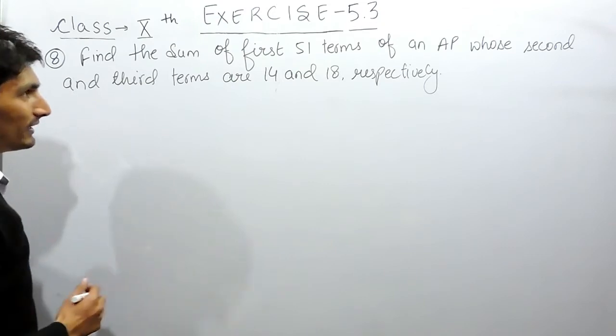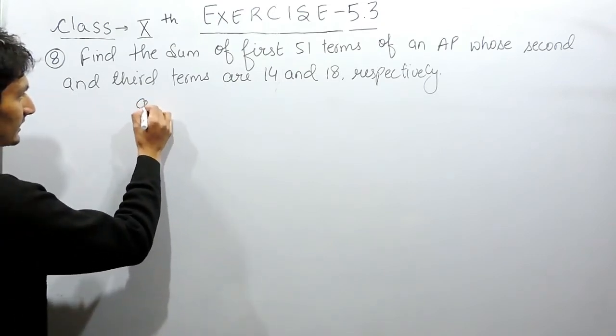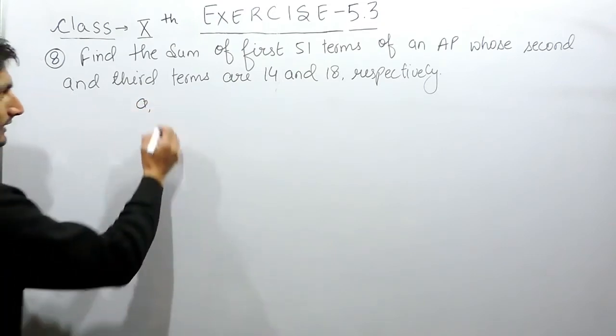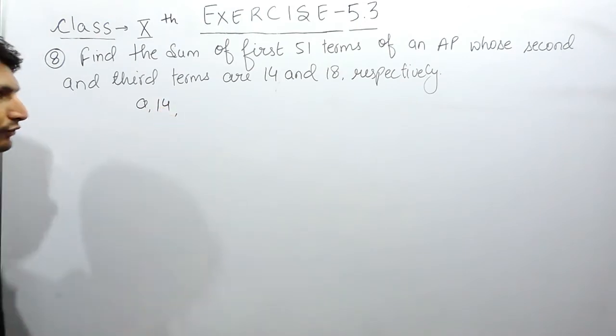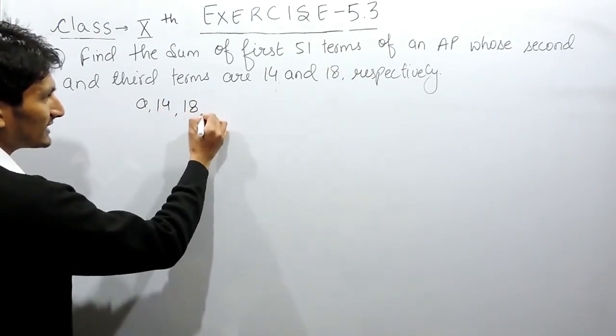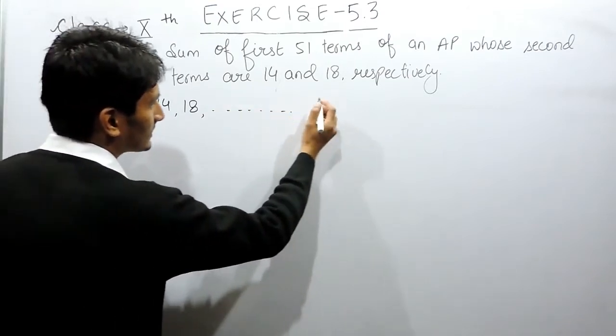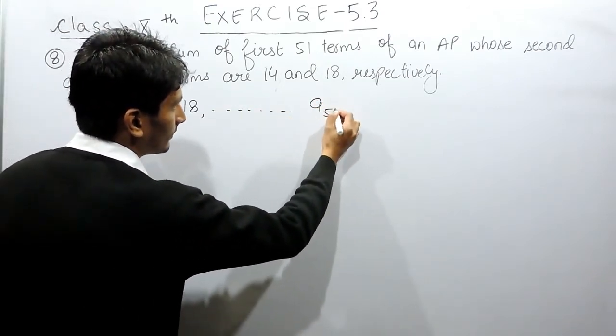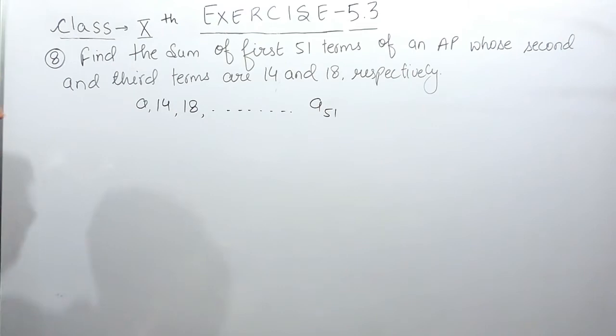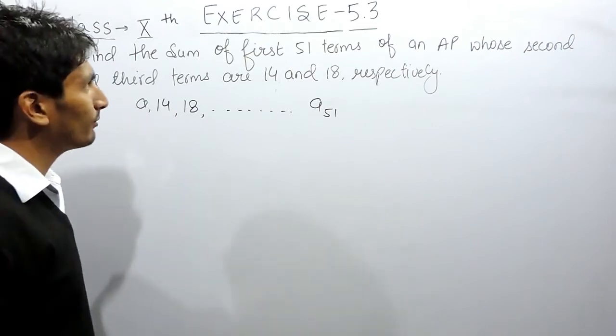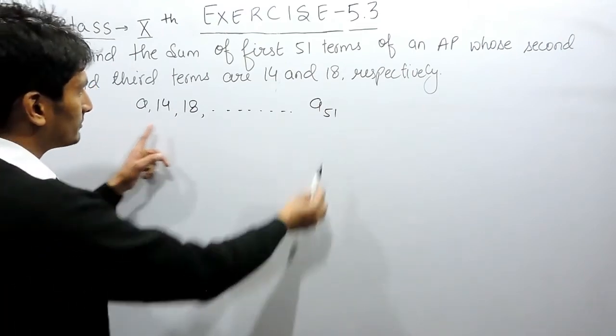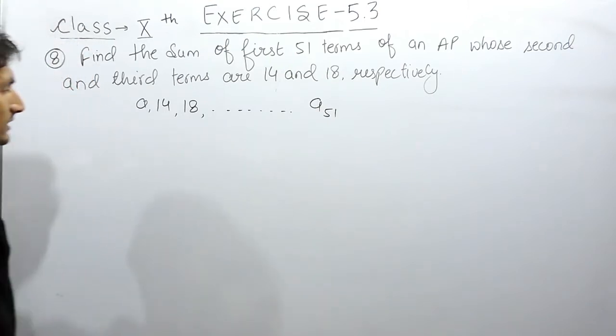So an AP is given to you. If I consider the first term as A, the second term is given to you as 14 and the third term is given to you as 18, and this is till 51 terms. You have to find the sum of first 51 terms. These are 51 terms and you have to find the sum of these terms.